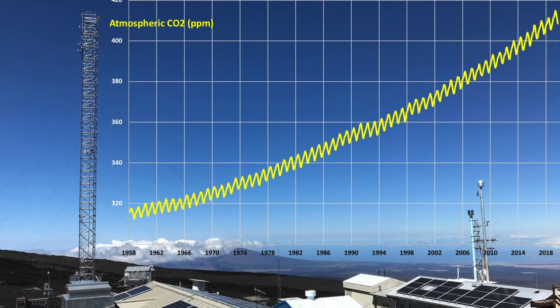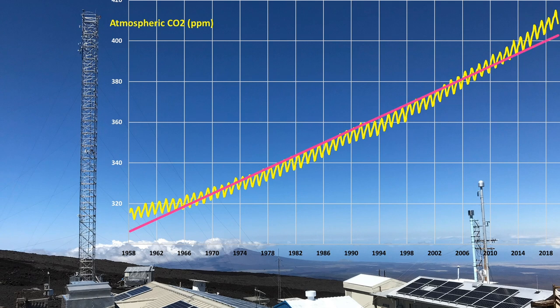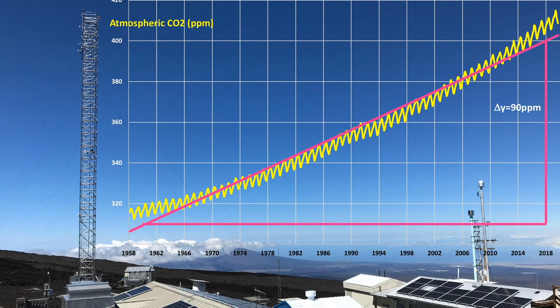Let's go back to Mauna Loa Observatory. These data are publicly available so we can download and explore them in more detail. With this graph, we can see that CO2 is increasing. But we can also ask: how fast is it increasing? To answer that, we measure the slope of the line — the change in CO2 on the vertical axis divided by the change in time on the horizontal axis. When we do that, we get an average rate of change of 1.6 parts per million per year.